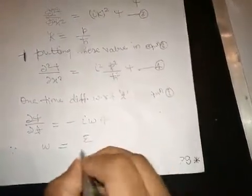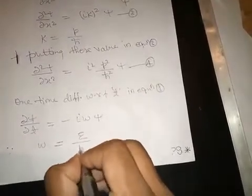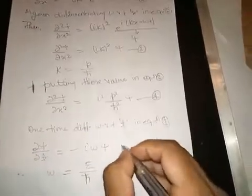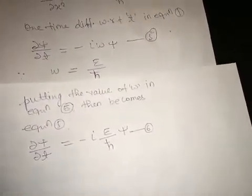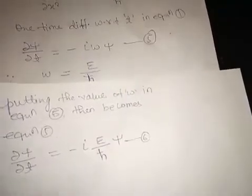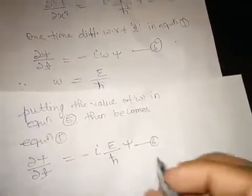Let this be equation 5. Putting the value of ω = E/ℏ in equation number 5, it becomes ∂ψ/∂t equals minus (iE/ℏ)ψ. Let this be equation 6.